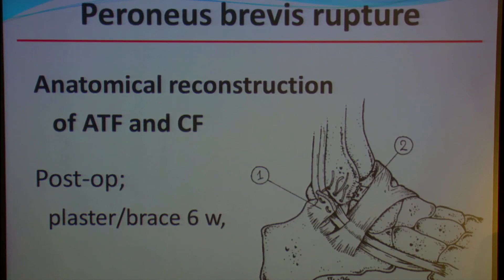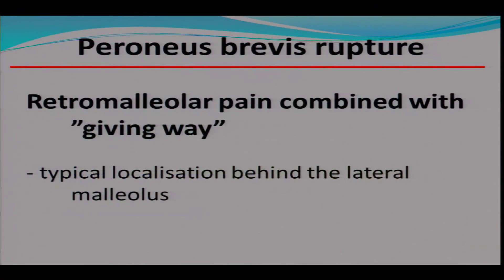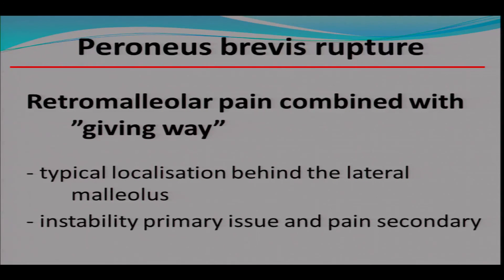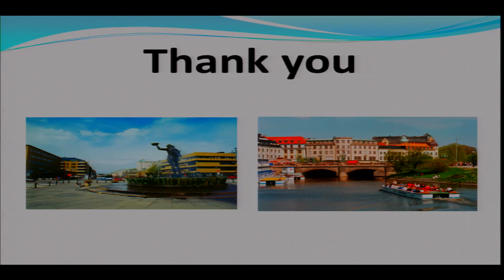Postoperatively, rehab follows immobilization in plaster for six weeks. I think we can probably be quicker, but I haven't tested it and there is no randomized study on it. To summarize: retromalleolar pain combined with giving way and typical localization behind the lateral malleolus — where instability is the primary issue and pain is secondary — should prompt us to look for both ankle instability and the tendon problem. The tendon injury should always be looked for, and the tendon repair should be performed simultaneously with ligament reconstruction. Thanks.